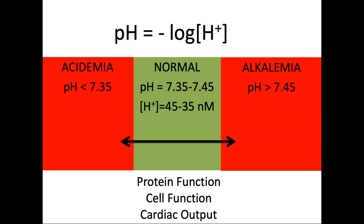The body really cares about pH. Proteins can denature when the pH gets out of whack, so the body needs to keep pH normal for good protein function, for receptors to function, for cells to function, and to maintain cardiac output. When we get outside the normal range, we have disorders. When the pH is below 7.35, we call that acidemia. When the pH is above 7.45, we call that alkalemia.